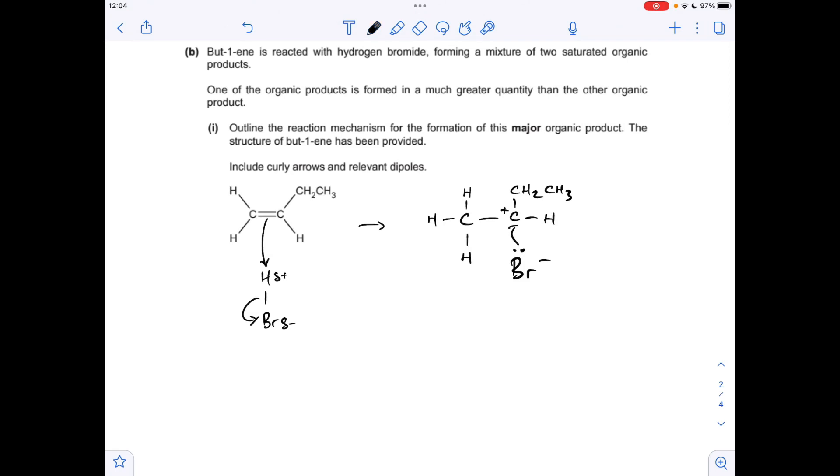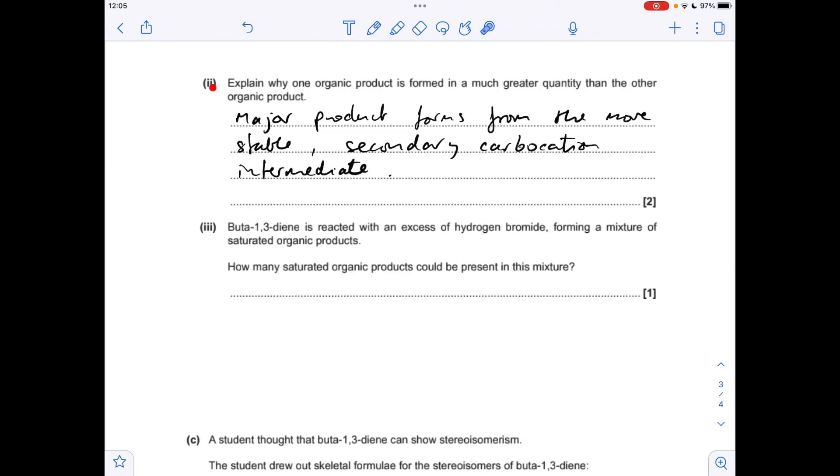The mechanism finishes off by a pair of electrons going from the lone pair on the Br minus ion, and that's going to generate this bond between the C and the Br. So in terms of the answer for the next part, we just need to say that the major product forms from the more stable secondary carbocation intermediate.